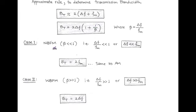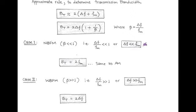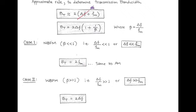Now, first we consider narrow band FM. In this case, modulation index β is far less than 1 radian, so we can say that ΔF/FM is less than 1. And after rearranging, we have ΔF less than modulating frequency FM. When we apply this to find transmission bandwidth, we get twice of FM — here we neglect ΔF as compared to modulating frequency. This transmission bandwidth of narrow band FM is the same as amplitude modulation.